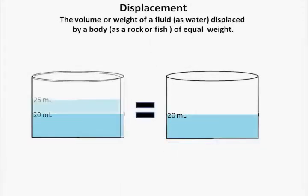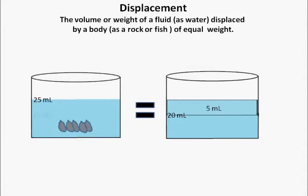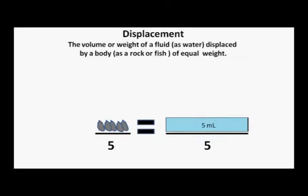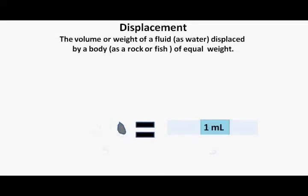In other words, 5 stones will displace 5 milliliters. To calculate how many milliliters one stone will displace, we divide the number of milliliters displaced, 5, by the number of stones it took to displace them, also 5. In our example, 1 milliliter is displaced by 1 stone.